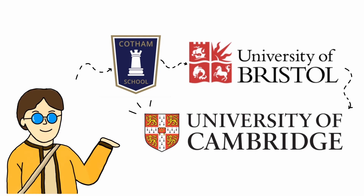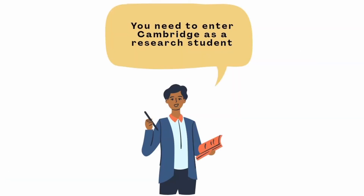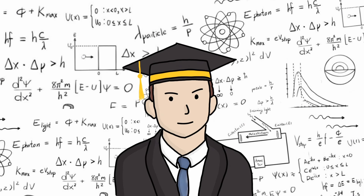In 1923, he entered the University of Cambridge as a research student, following the advice of his mathematics professors and with the help of a fellowship. In 1926, he received his PhD.